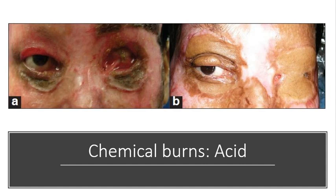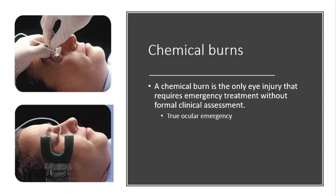Here's a picture of a chemical burn caused by an acidic substance. As you can see, the acid has a very severe impact on ocular tissues and the skin all around the eyes — these are quite devastating injuries, usually caused by assault. A chemical burn is the only eye injury that requires emergency treatment without formal clinical assessment. Early irrigation is absolutely critical in limiting the duration of chemical exposure. The goal of irrigation is to remove the substance and restore the normal pH of the eye.